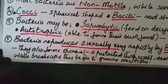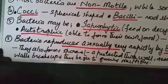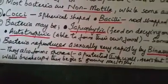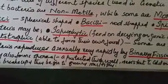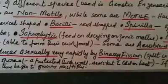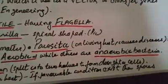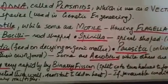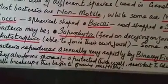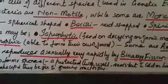Bacteria also form spores. Spore formation is a process that occurs under unfavorable conditions such as high heat or cold. Spores are thick-walled structures formed around the bacteria to protect them against the unfavorable environment. Once the environment becomes favorable, these spore walls break open and the bacteria begin to grow and multiply.